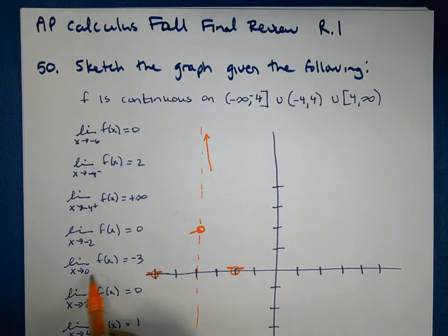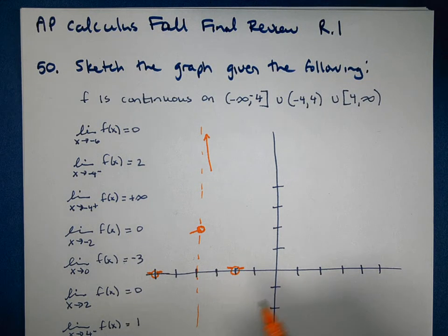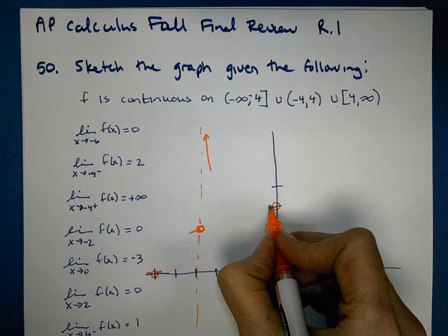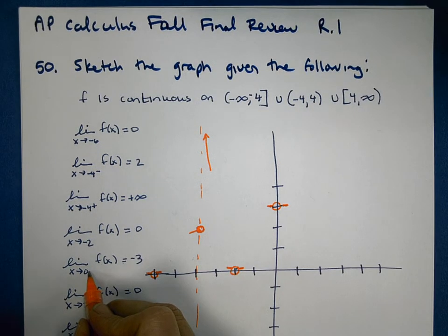As x is approaching 0, the y value looks like negative 3. So here at 0, I'm going to go up to negative 3, put a circle. And again, there will be tails at both sides, in and out, because there's no little plus or minus.